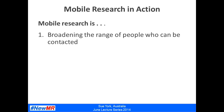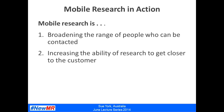In terms of mobile research in action, what mobile research is currently doing is broadening the range of people who can be contacted, and increasing the ability of research to get closer to the customer at that moment of truth. It's also enabling us to improve the quality of data — in the case of passive data, we can get really accurate pictures of where people have been, whereas if we're asking people to recall things they'd make mistakes. Passive data can give us quite accurate data. Photographic evidence is also really helping improve data quality — people don't always remember things, but if they take a photo we get an accurate picture of what was going on. And simply by broadening the range of people contacted, that can improve data quality if we can get better samples including people who may not be reachable otherwise.